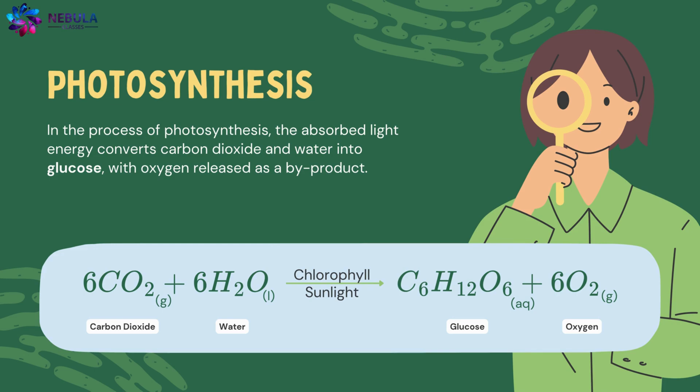In the process of photosynthesis, the absorbed light energy converts carbon dioxide and water into glucose, with oxygen released as a byproduct.